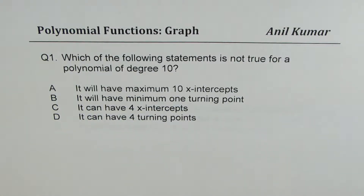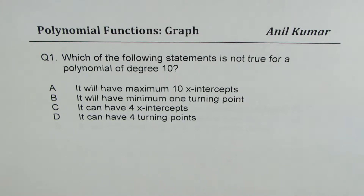Here is a multiple choice question on the graph of polynomial functions. Question number 1: Which of the following statements is not true for the polynomial of degree 10? A: It will have maximum 10 x-intercepts. B: It will have minimum 1 turning point. C: It will have 4 x-intercepts. And D: It will have 4 turning points. You can pause the video, answer the question, and then look into my solution.